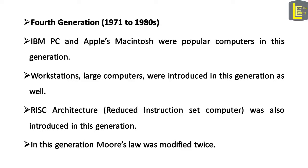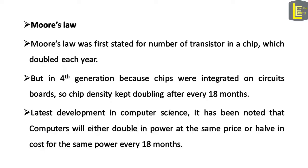In the fourth generation, Moore's law was modified. In the third generation, Moore's law stated that the number of transistors on a chip doubled each year. But in the fourth generation, because chips were integrated on circuit boards, chip density kept doubling after every 18 months. The latest development shows that computers will either double in power at the same price, or halve in cost for the same power, every 18 months.